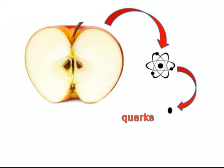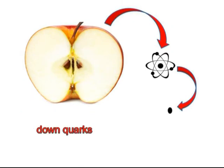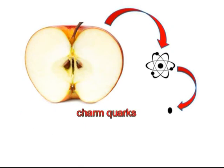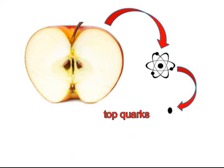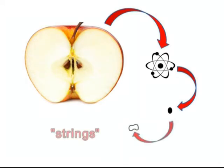There are six kinds of quarks, and they have interesting names, like up quarks, down quarks, charm quarks, strange quarks, bottom quarks, and top quarks. But what are quarks made of? The basic idea behind string theory is that fundamental particles such as quarks are actually composed of tiny things called strings.